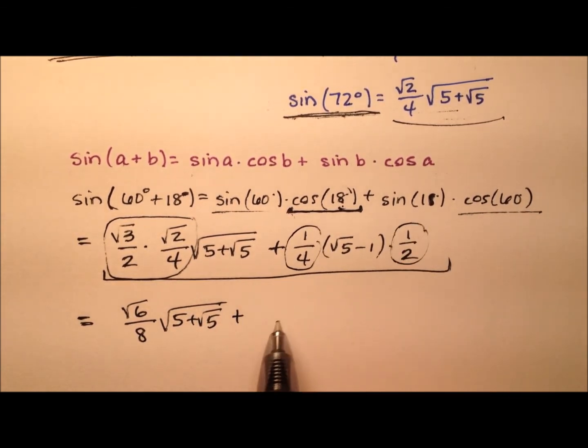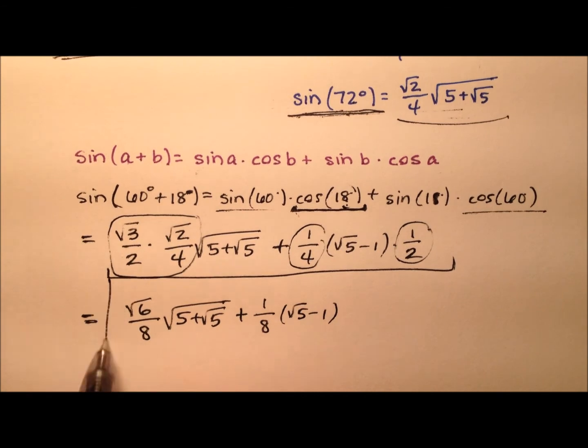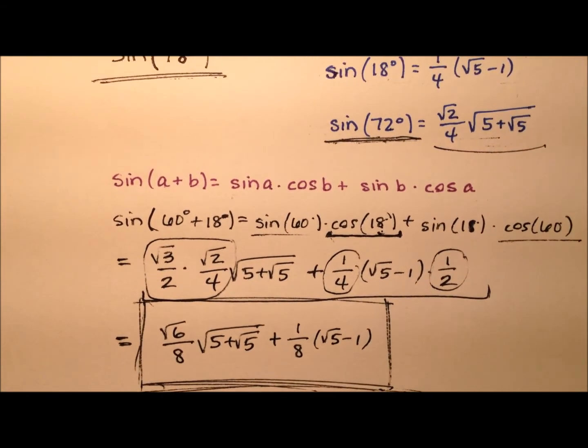I'll have the square root of 6 over 8 multiplied by this square root expression. And to that, we'll add, it looks like 1 fourth times a half will make 1 eighth and then multiply by the square root of 5 minus 1.